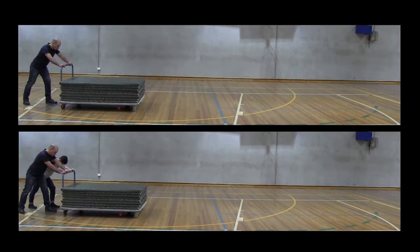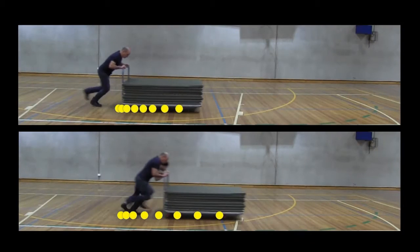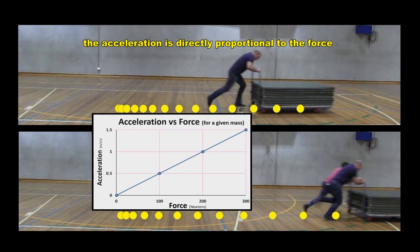A greater force causes an object to speed up faster than a smaller force does. A graph of acceleration versus force might look something like this. The more force, the more acceleration. We can say that the acceleration is directly proportional to the force. If you double the force, for example, the object's acceleration doubles.